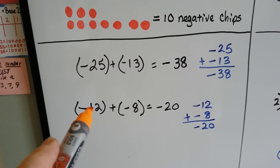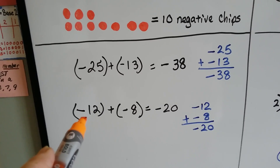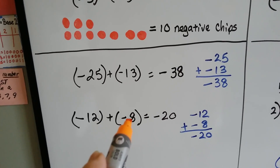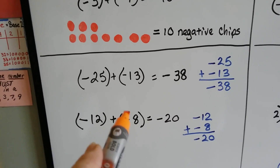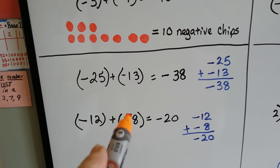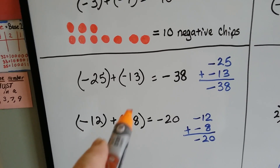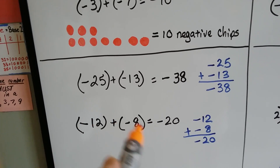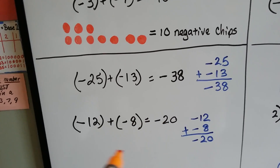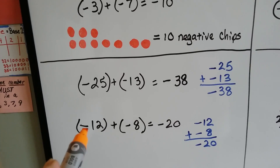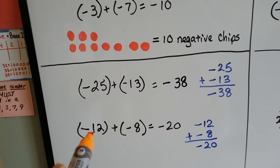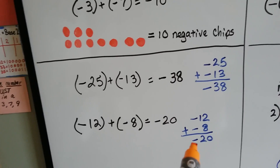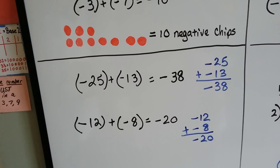The absolute value of negative 12 is 12, and the absolute value of negative 8 is 8. They've got the same sign — they're both negatives — so we add them together and get 20, and we use the sign that they're sharing. They're both sharing negative signs, so it's negative 20.